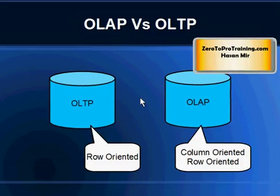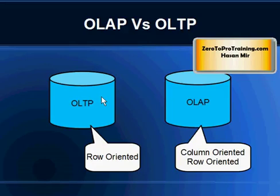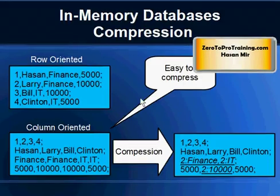Most OLTP systems use row-oriented or row-based storage for the reasons explained, because lots of inserts are happening. In OLAP, most systems use a balance of column-oriented and row-oriented — sometimes column-oriented is better, sometimes row-oriented is better. So we can say row-oriented is for OLTP, but for OLAP they use a balance of the two methods. These days a new breed of databases called in-memory databases has emerged.